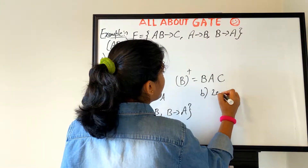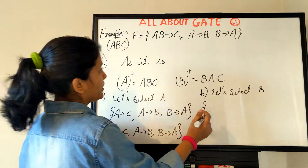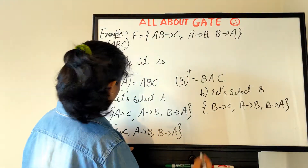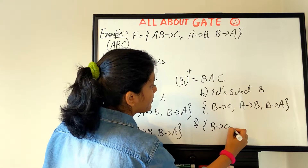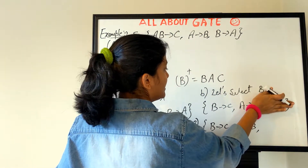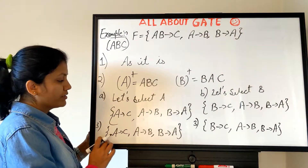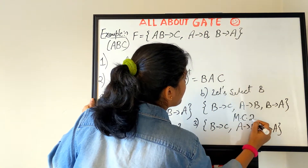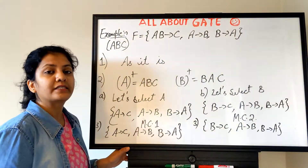Case 2: select B. After step 2 the FDs become B→C, A→B, and B→A. Applying step 3: remove B→C and find B⁺ — only B, so it is essential. Remove A→B and find A⁺ — only A, C but not B, so it is essential. All three are essential. Minimal cover 2: {B→C, A→B, B→A}. We now have two minimal covers from the same functional dependency set.